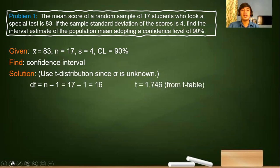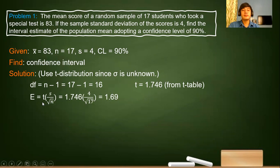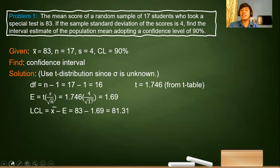We find the confidence interval using the T distribution since sigma is unknown but S is available. The degrees of freedom is n minus 1 equals 17 minus 1 equals 16. From the T table, the intersection gives us 1.746. For the margin of error, we use the formula T times S over the square root of n — substituting: 1.746 multiplied by 4 over the square root of 17 — the answer is 1.69. For the lower confidence limit, we subtract, giving 81.31. For the upper confidence limit, we add 1.69, giving 84.69.